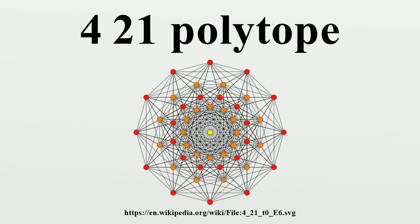Within a regular triacontagon, its 6,720 edges are drawn between the 240 vertices. Specific higher elements can also be extracted and drawn on this projection. As its 240 vertices represent the root vectors of the simple Lie group E8, the polytope is sometimes referred to as the E8 polytope.